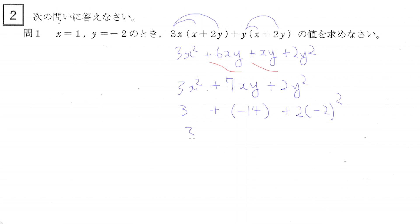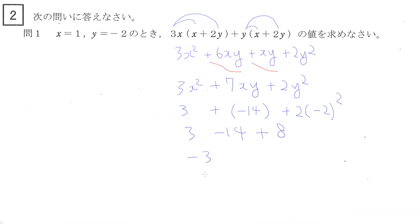6 plus 1 is 7. It doesn't seem much simpler, but let's substitute: x is 1, so we can ignore it. 3 plus 7 times minus 2 is minus 14, plus 2 times minus 2 squared. So 3 minus 14 plus 8: the answer is minus 3. 問2: 2種類のマーク（スペード、ダイヤ）のカードが4枚あります。3枚を左から右に並べるとき、異なるマークのカードが交互になる並べ方は何通りありますか。